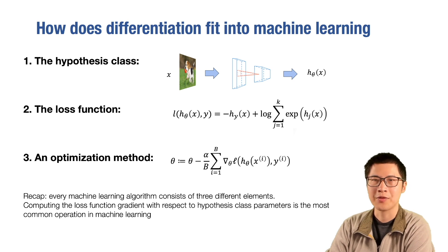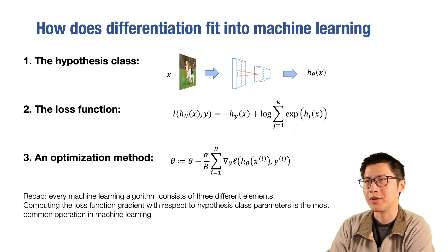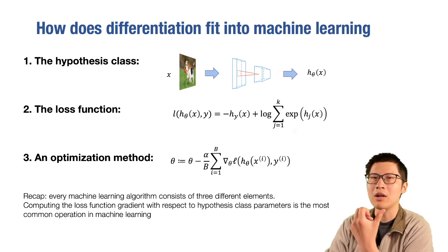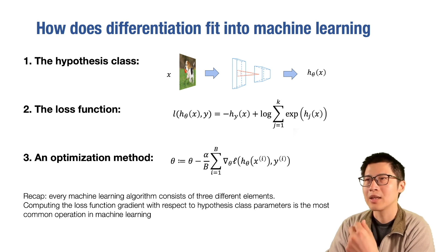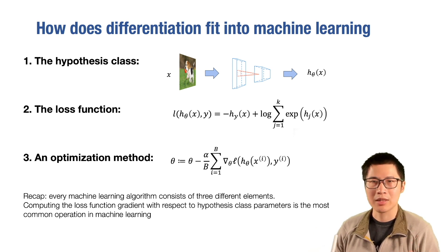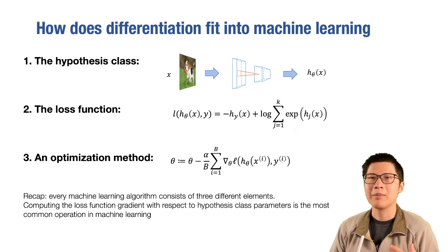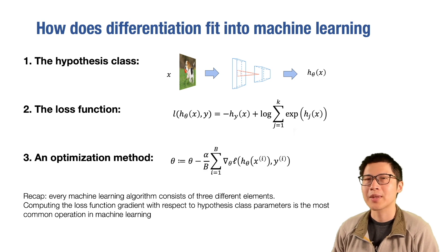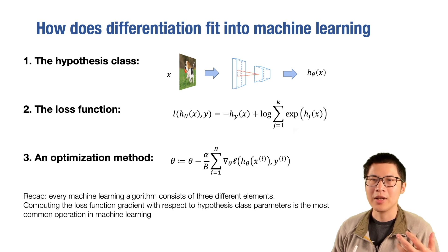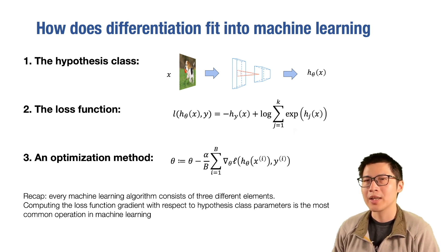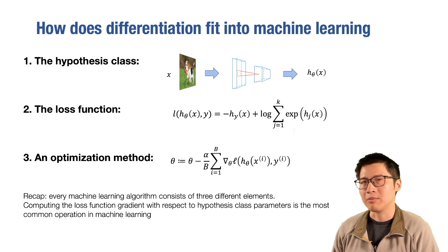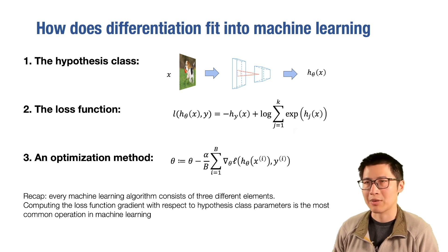How does automatic differentiation fit into the general machine learning workflow? If we recall the previous two classes, we talked about the basic elements of machine learning. When you think about a machine learning problem, you want to think about it from a few perspectives. First, when you think about a hypothesis class — for a given input x, how do you get predictions? In the last few lectures, we talked about multi-layer perceptrons and single-layer perceptron algorithms.